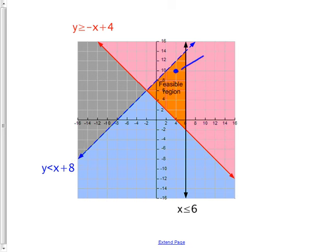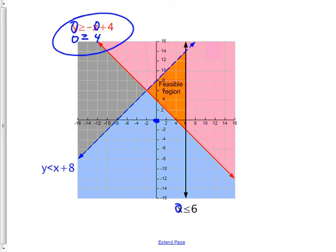If I pick (0, 0) — one of my favorite points because it cancels so easily — and test it: 0 ≤ −0 + 4 gives 0 ≤ 4, which is true. But is 0 ≥ 4? No. So the origin does not work for that equation, meaning it's not in the feasible region. It works in one of them — like 0 < 6 works — but it has to work in all of them.